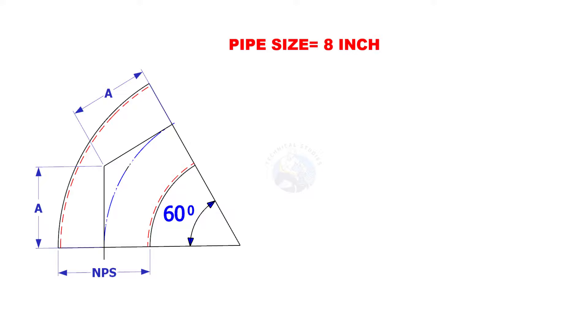This time the pipe size is 8 inches and the degree is 60. The constant for 60 degree is 22. Multiply 8 by 22. The answer is 176 millimeters.